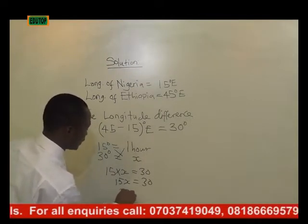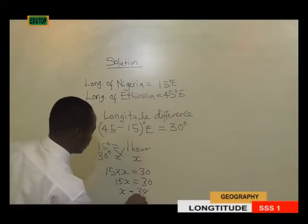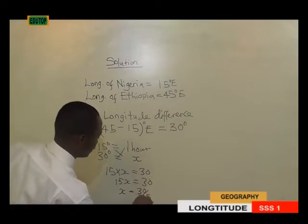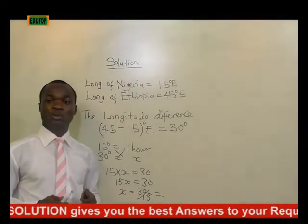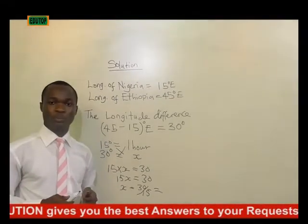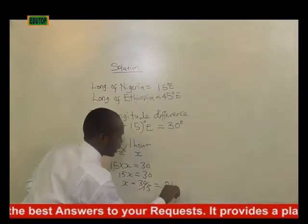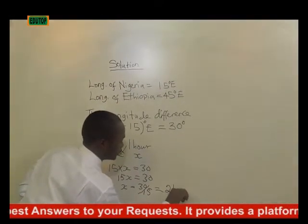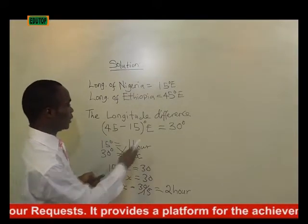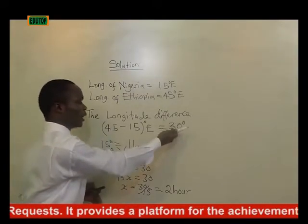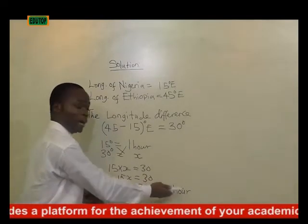Therefore x equals 30 divided by 15, which gives us 2. That is two hours, because our aim is to convert the longitudinal difference of 30 degrees to time, and having done so, we get two hours.